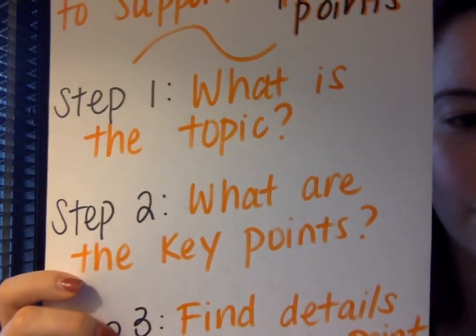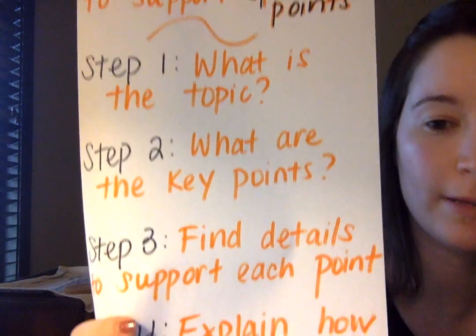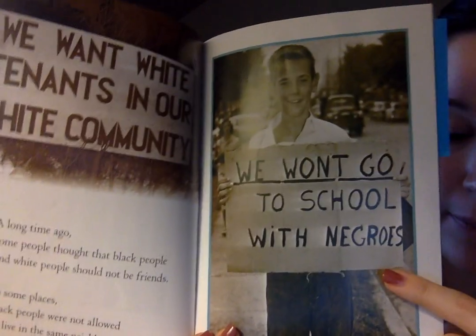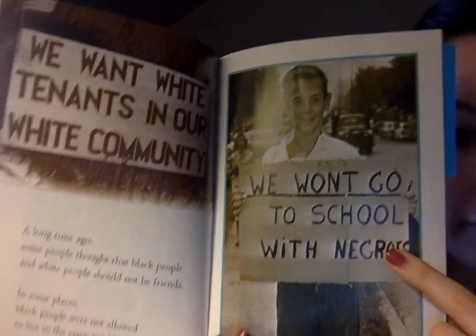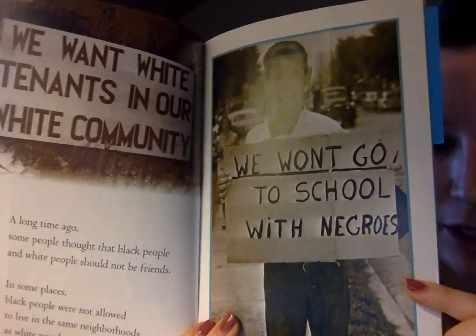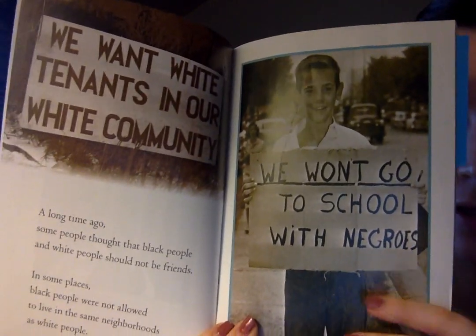Step two, what are the key points? We know the key point we're focusing on today is about how white people wanted black and white people to be separate during this time period — that's what the author is making clear. Step three, find details to support each point. This one is pretty straightforward. I see a white boy holding a sign that says he doesn't want to go to school with black people. This clearly shows that this white person supported segregation. This is a real photograph of a boy that wanted that, which proves the author's point that white people wanted segregation.